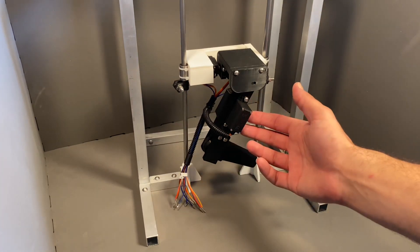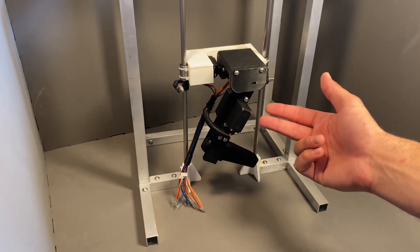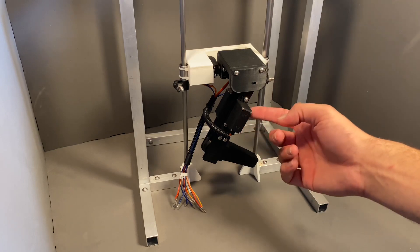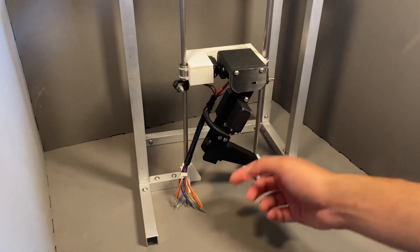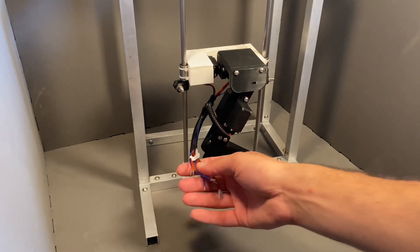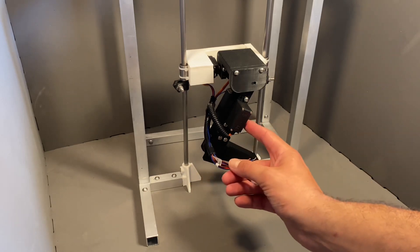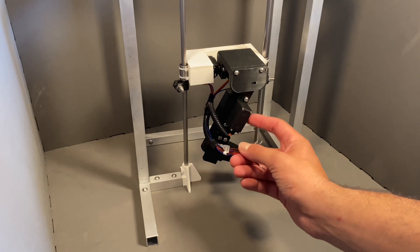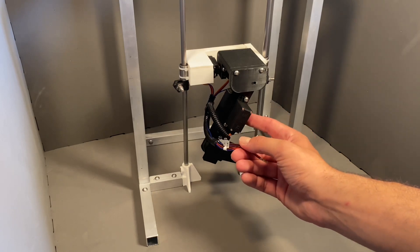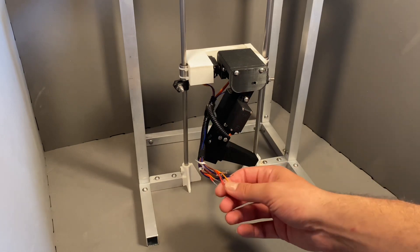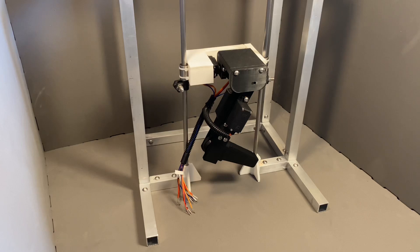Typically RC servos only have three cables, the power, ground, and input signal. That input signal is commanding the servo to a specific location and typically they do not provide any sort of feedback. So these blue wires here are wires that I've added on into each of these servos that allows me to read the feedback potentiometer inside that relates the output angle with a voltage. So why don't we crack the back off of one of these servos and I'll show you how I added in that wire.